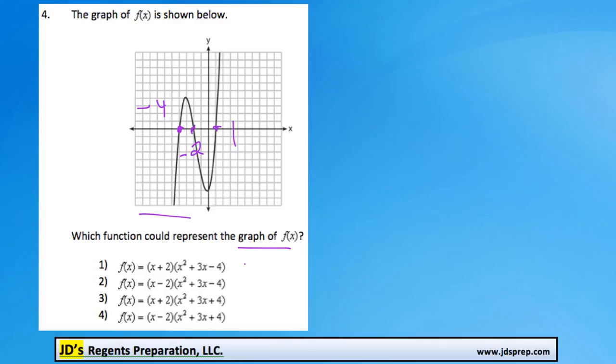So that means when we're looking for the factored form of this function, we want to find x plus 4, x plus 2, and x minus 1.